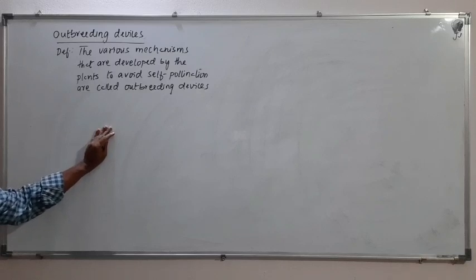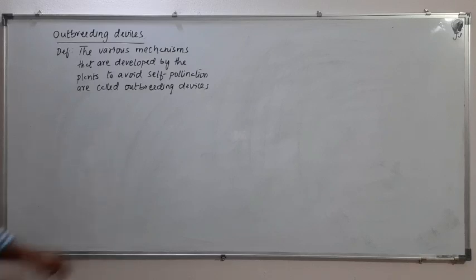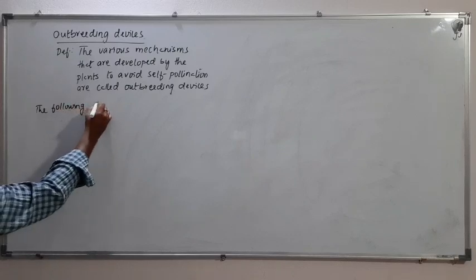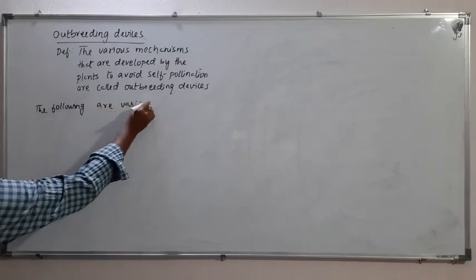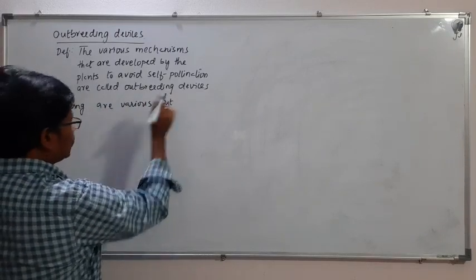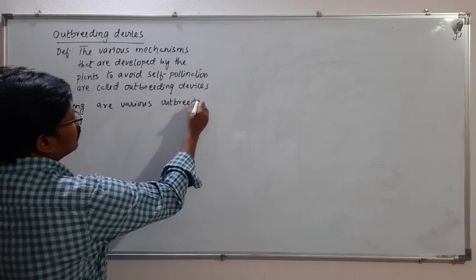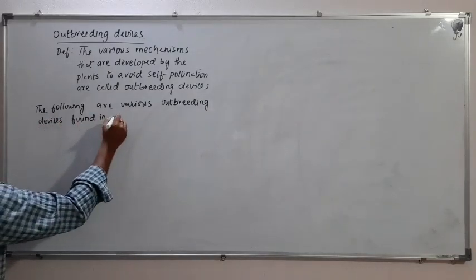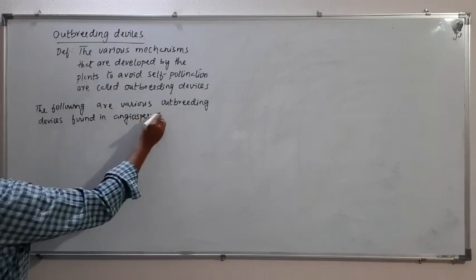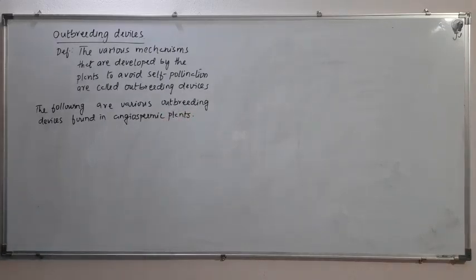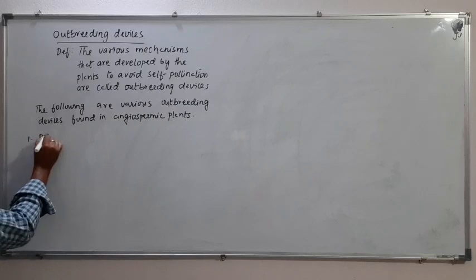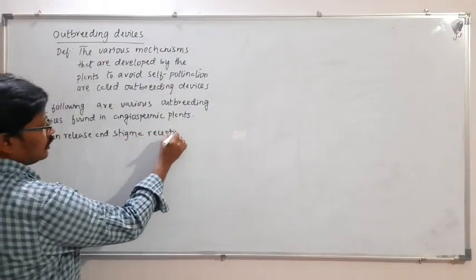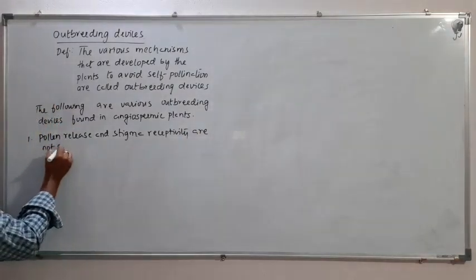I am going to discuss these Outbreeding Devices mainly under four statements. The following are various Outbreeding Devices found in angiosperms. One: Pollen Release and Stigma Receptivity are not synchronized.